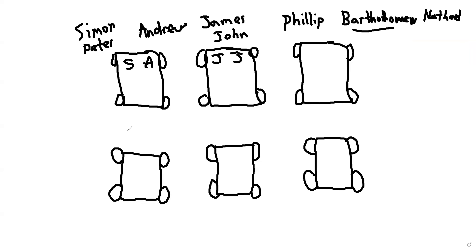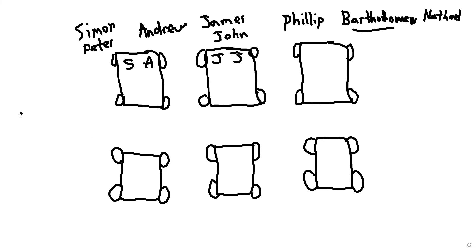Golf cart three is Philip and Bartholomew, also known as Nathaniel. Philip was a star — he witnessed to the Ethiopian, was translated to another town, and had seven daughters who were prophetesses. So that's Philip and Nathaniel in cart three.